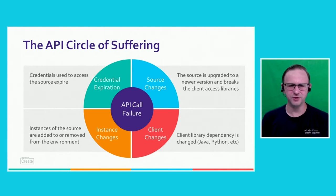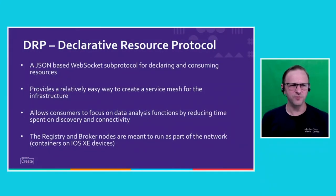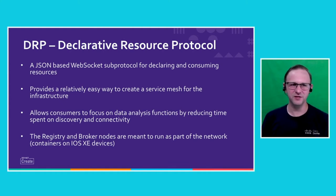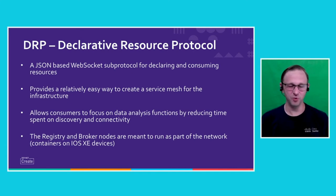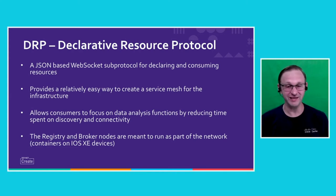The approach I've taken is to create what amounts to a service mesh for the infrastructure. It started off as a POC and ended up evolving because the approach seemed to work. What I'm creating is called DRP — Declarative Resource Protocol. It's a JSON-based WebSocket subprotocol. In a nutshell, it gives you a way to make your services declare themselves to a mesh, and processes that need to consume the data can simply go to a broker and the broker will make the request on behalf of the consumers. Going back to the idea that the network is the heart of what we do, the registry and the brokers are meant to run as part of the network — imagine advertising your services as you would a route through BGP.